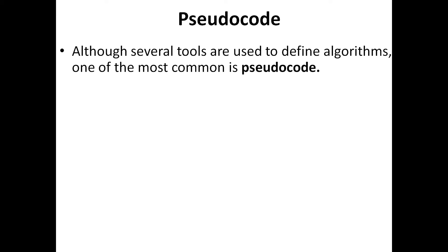Pseudocode is just an algorithm. Pseudocode is nothing but a standard for writing algorithms. The problem is that when you want to write an algorithm, you can write it in your own words. But when you want to share the algorithm with others so that they can also understand and make use of it, it is better that it is written in a particular standard so that it avoids any misinterpretation.